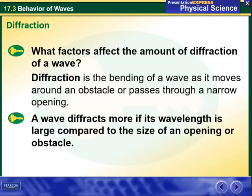Hello my dear students and welcome to this week's overview. During this week we will be talking about diffraction, which is one of the behaviors of waves. So what factors affect the amount of diffraction of a wave? By definition, diffraction is the bending of a wave as it moves around an obstacle or passes through a narrow opening. A wave diffracts more if its wavelength is large compared to the size of an opening or an obstacle.